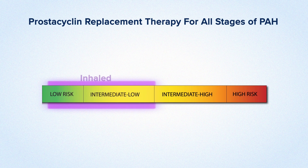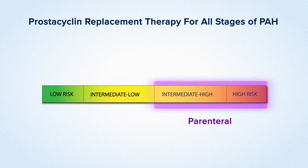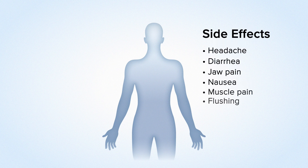Prostacyclin replacement therapies are most commonly used in combination with other classes of PAH therapy. With multiple administration forms available today, these therapies can be used earlier to adapt to a variety of patient lifestyles and used throughout all stages of PAH disease. Prostacyclin replacement therapies have a well-characterized safety profile with side effects that are well understood, including headache, diarrhea, jaw pain, nausea, muscle pain, and flushing. Additional side effects may be specific to the drug and route of administration. Methods to help manage these expected effects can be personalized to each patient.